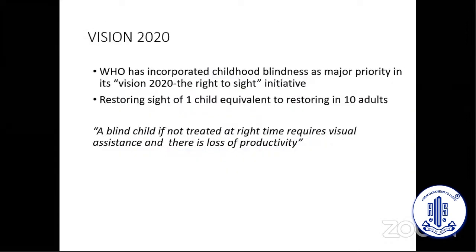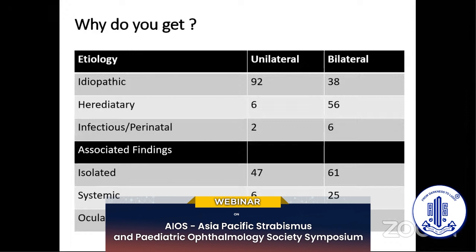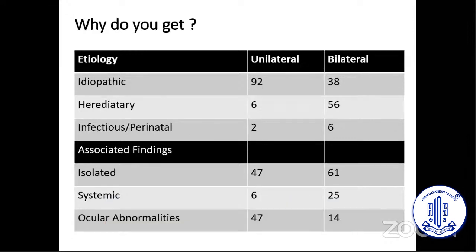It's a universal phenomenon. With this in mind, WHO has Vision 2020, which requires that each child is taken seriously because treating a child is as good as treating 10 adults. Why do we get it? We still do not know. They could be unilateral or bilateral. The majority are idiopathic — idiopathic because we are still not able to find out why it's happening in so many people. The only thing we can do is make the media clear in them.